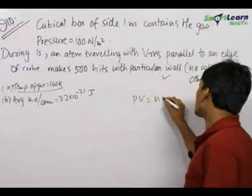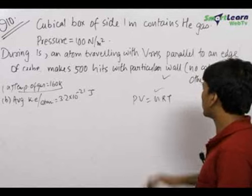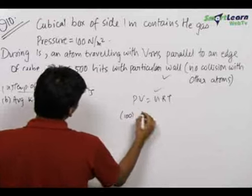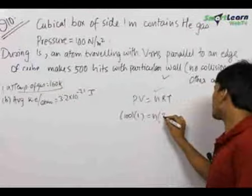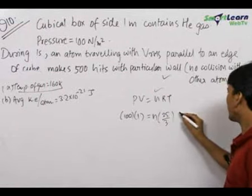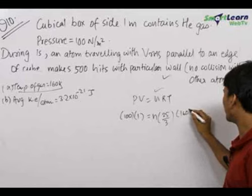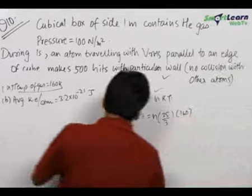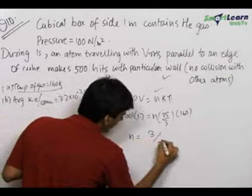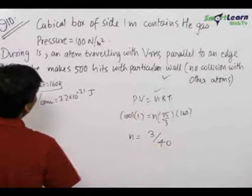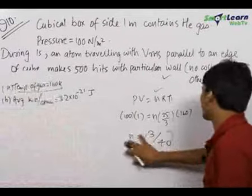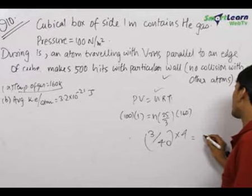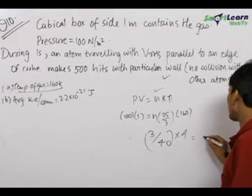We use the formula PV = nRT. Since we aim to find the number of moles of helium in the box so we can find the total mass: pressure is 100 N/m², volume is 1 m³. This equals n × (25/3) × 160. From here, the number of moles comes out to be 3/40. Multiplying by the molecular mass of helium — 4 grams — we get the total mass of helium in the box equal to 3/10 grams, which is 0.3 grams.